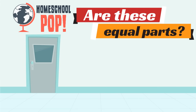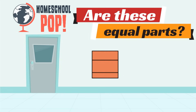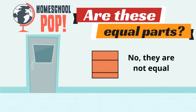Let's give this picture a try. How many parts does this picture show? Three. And are these parts equal parts? No, they're not equal parts. Can you imagine if you got that bottom part — if this square was like a cake and you got that bottom part? That wouldn't be fair. These are not equal parts.